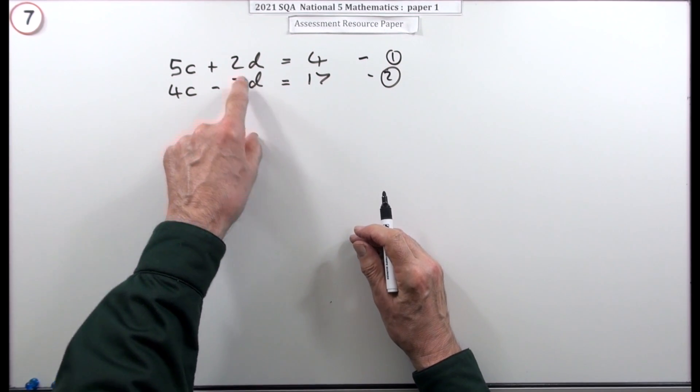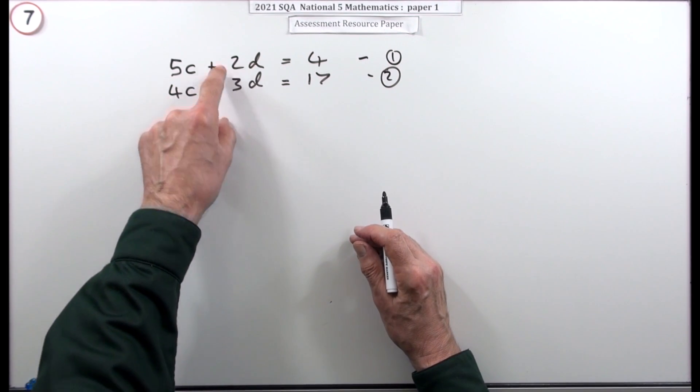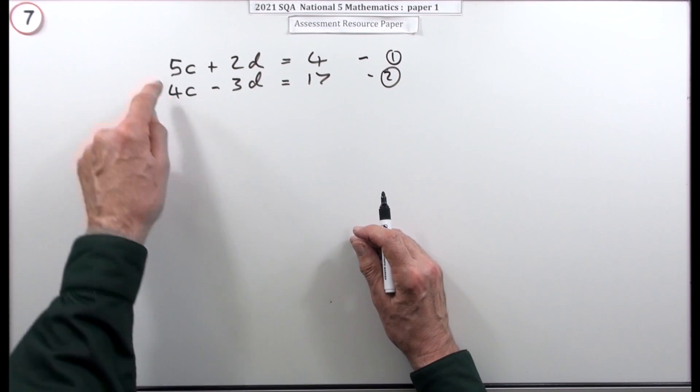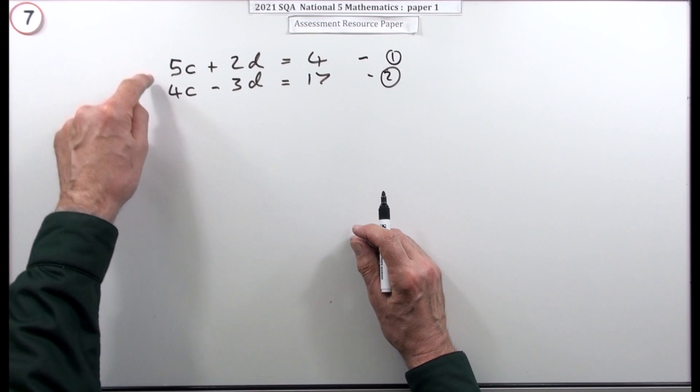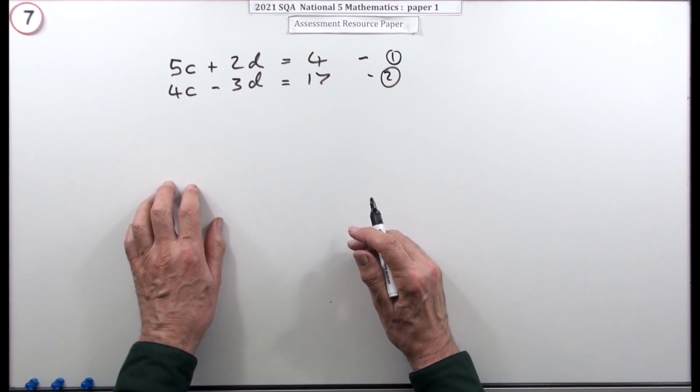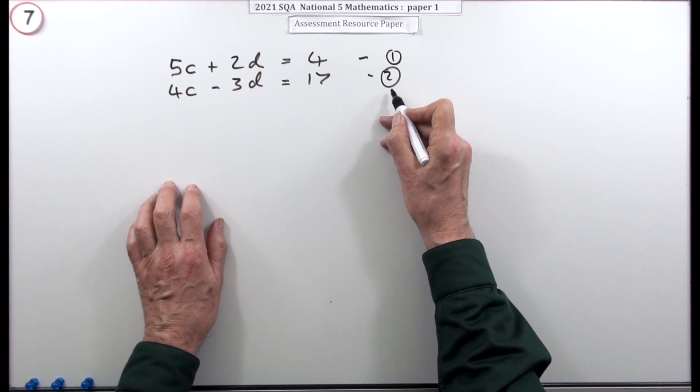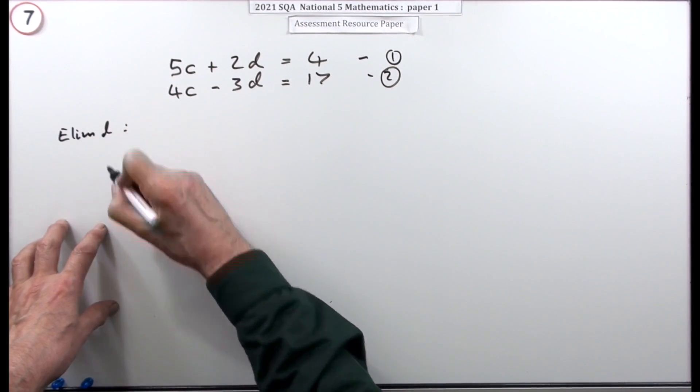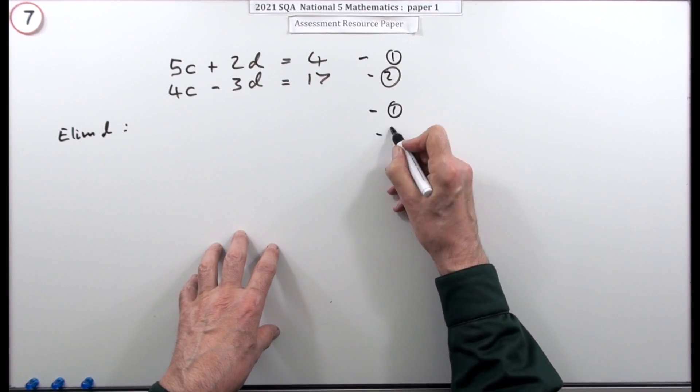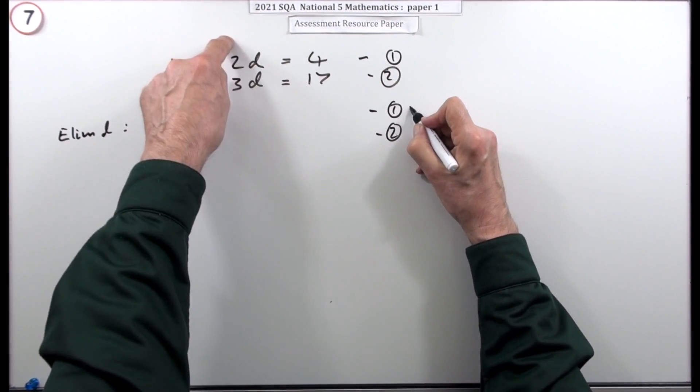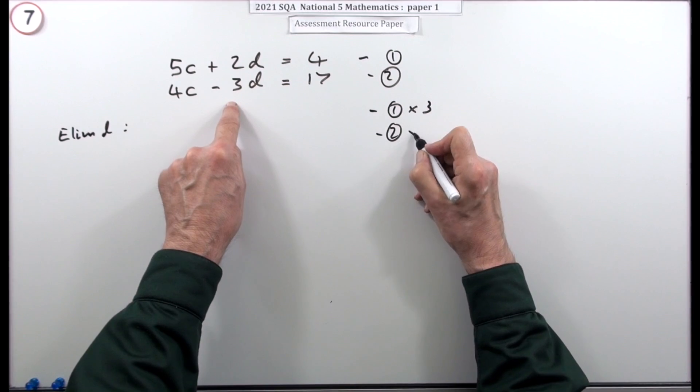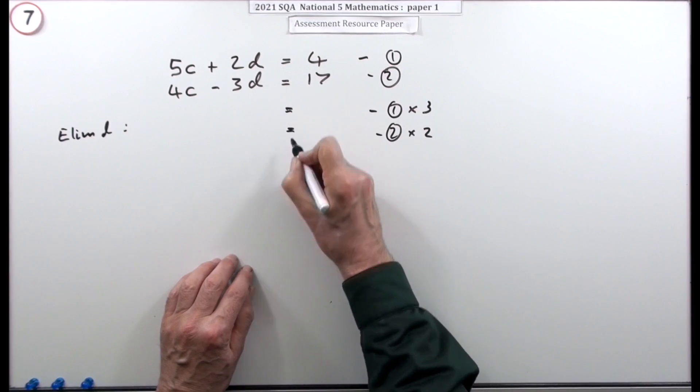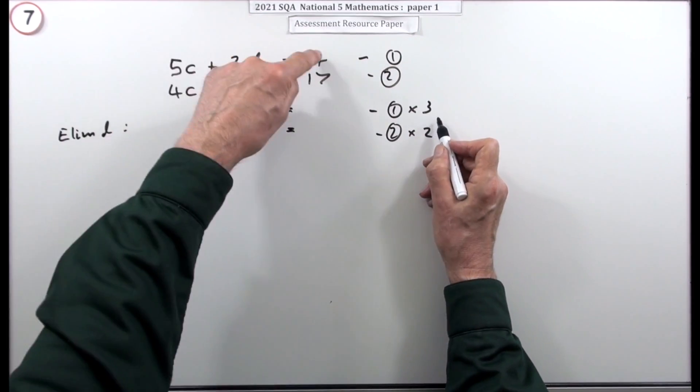The obvious one to go for would be d because the numbers are not only smaller but they've got opposite signs. So I can just multiply them and then when I add them they'll just disappear, rather than going for c where I'd have bigger numbers and I'd have to subtract them to make them disappear. My plan is I'm going to eliminate d, and the way I'm going to do that is I'm going to do three of them and two of them. That way I'll get a plus six and a minus six and d will go. So everything here gets multiplied by three.